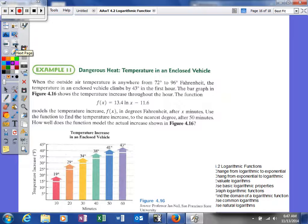Last example looks like this: dangerous heat temperature in an enclosed vehicle. When outside air temperature is somewhere between 72 and 96 Fahrenheit, temperature of an enclosed vehicle climbs 43 degrees in the first hour. The bar graph shows the temperature increase throughout the hour. The function right there models the temperature increase f(x) in degrees Fahrenheit after x minutes. Use the function to find the temperature increase to the nearest degree after 50 minutes. So what we're going to do is we're just going to take our formula and we'll plug it in. And see, this is why we do not leave animals in a car with the windows up, because apparently it gets pretty warm in there.